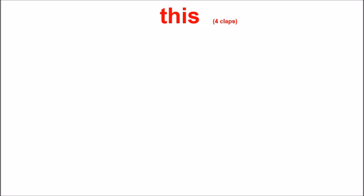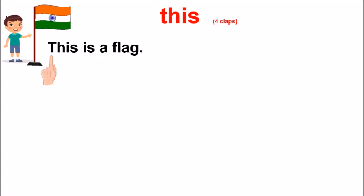This boy is pointing to something. And he is asking, what is this? What is this, children? This is a flag. Read the sentence. This is a flag. The flag is near to the boy. That is why we have used this.